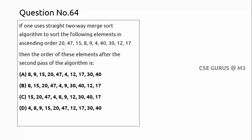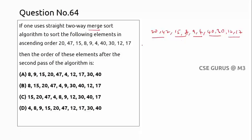Question number 64: using straight two-way merge sort on the given elements in ascending order, find the arrangement after the second pass. In two-way merge sort, every two elements are taken and sorted in pass one. Next pass sorts every four elements, then every eight, and so on.